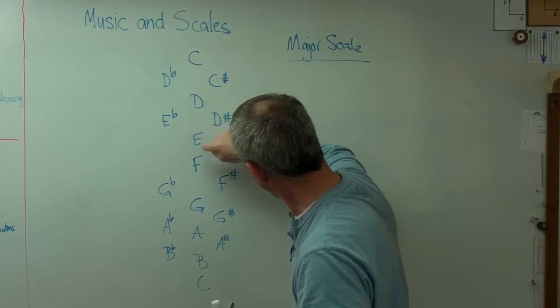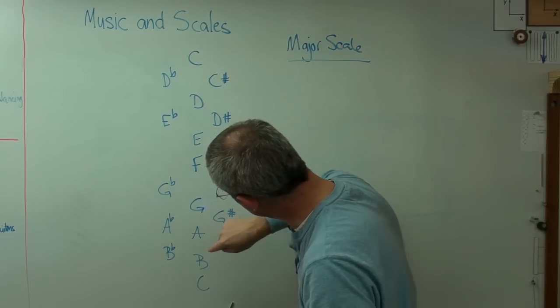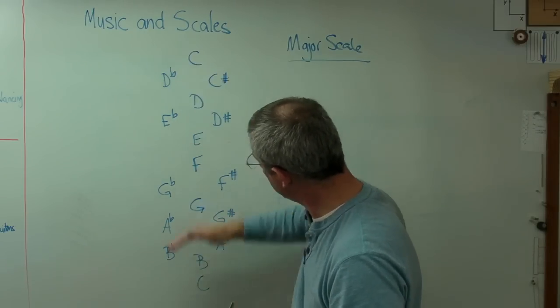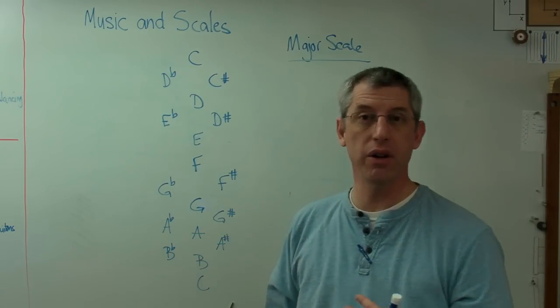Well, what that means is they've picked a certain collection of notes from the possible notes. Now, there's one, two, three, four, five, six, seven, eight, nine, ten, eleven, twelve possible notes.